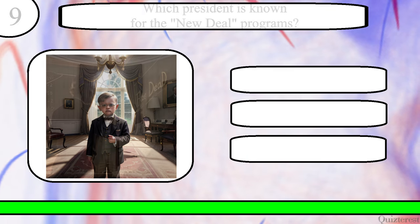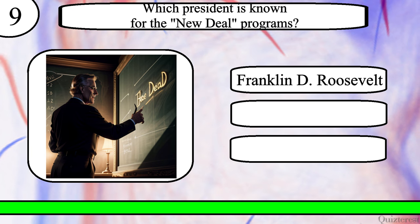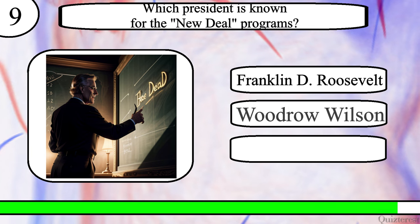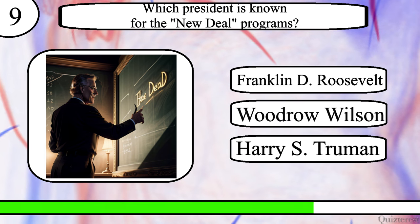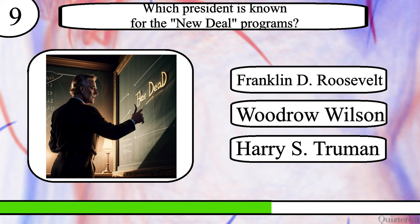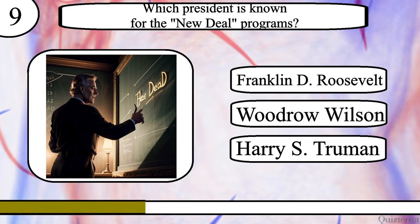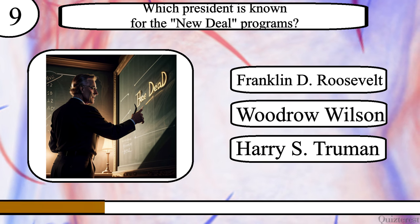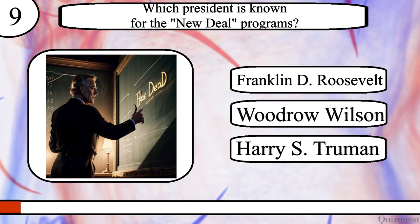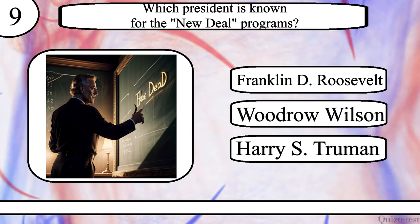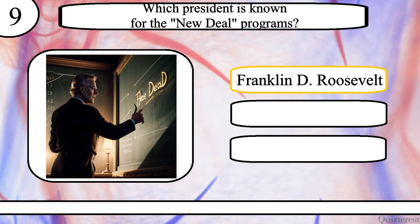Question 9. Which President is known for the New Deal programmes? Franklin D. Roosevelt, Woodrow Wilson or Harry S. Truman? The correct answer is Franklin D. Roosevelt.